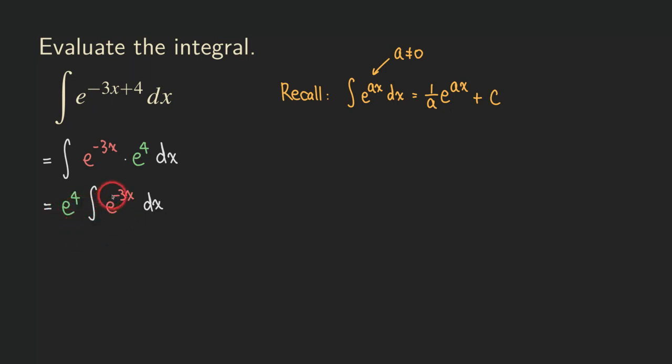And so right now, when we are integrating e to the negative three x, we can use this formula that we have right here. Actually, you can show how we got this formula by checking out the other video in the description. So see the link in there. And then for this e to the negative three x, our a is negative three.